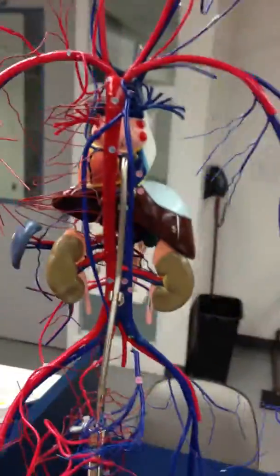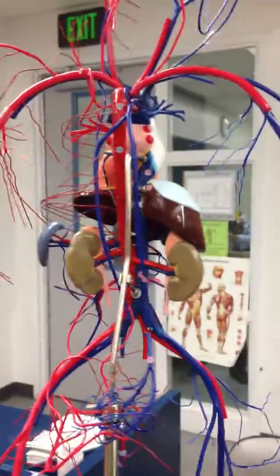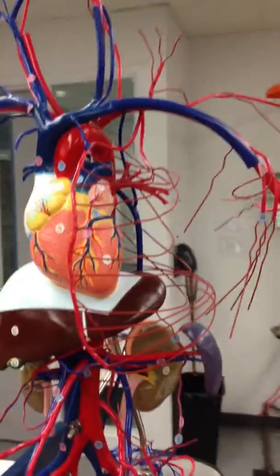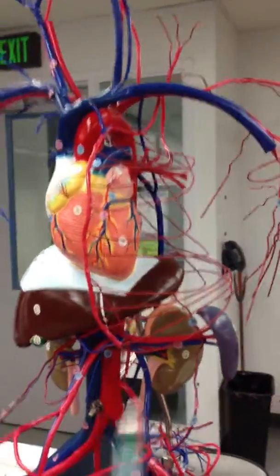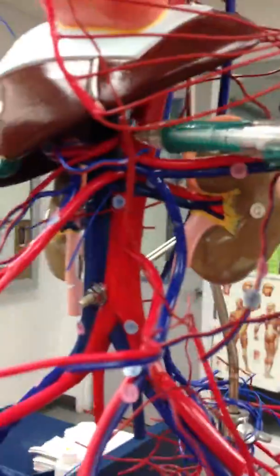The celiac trunk is number 83, which is up here in the front. The celiac trunk is right in here, before the bifurcation of the hepatic.